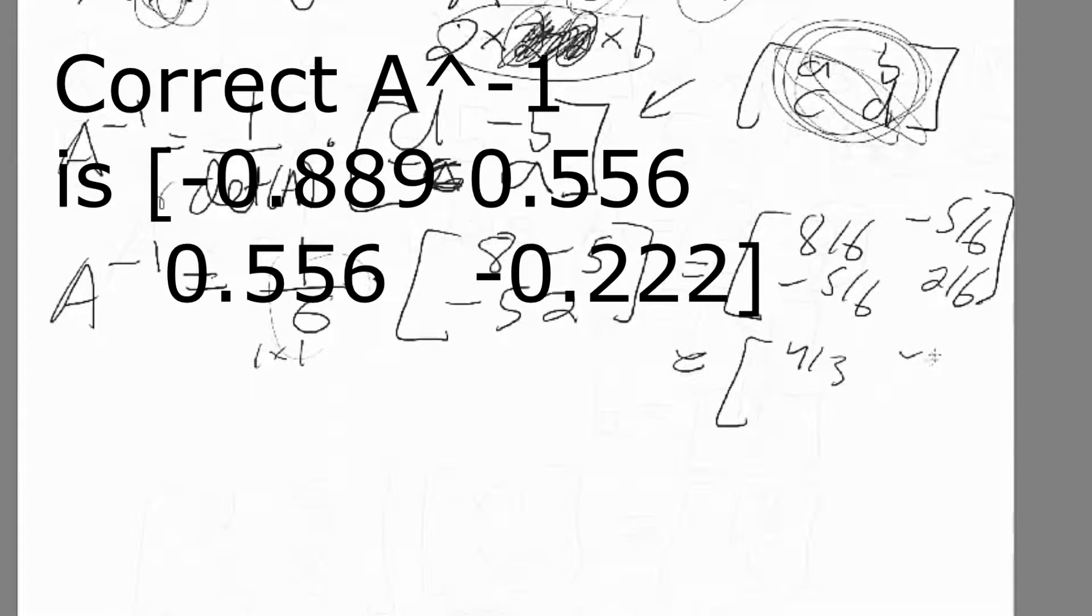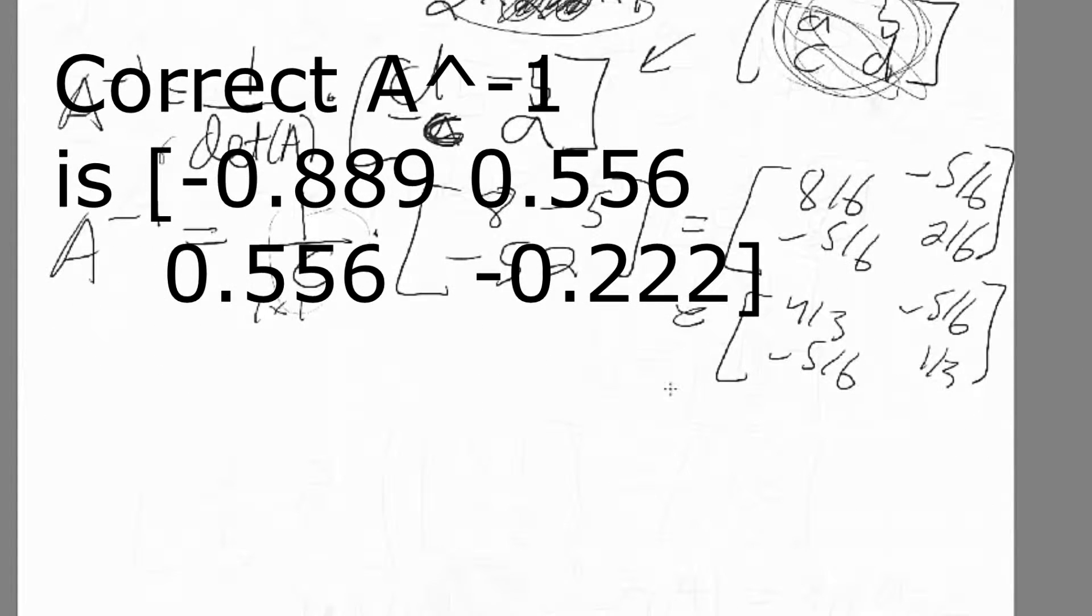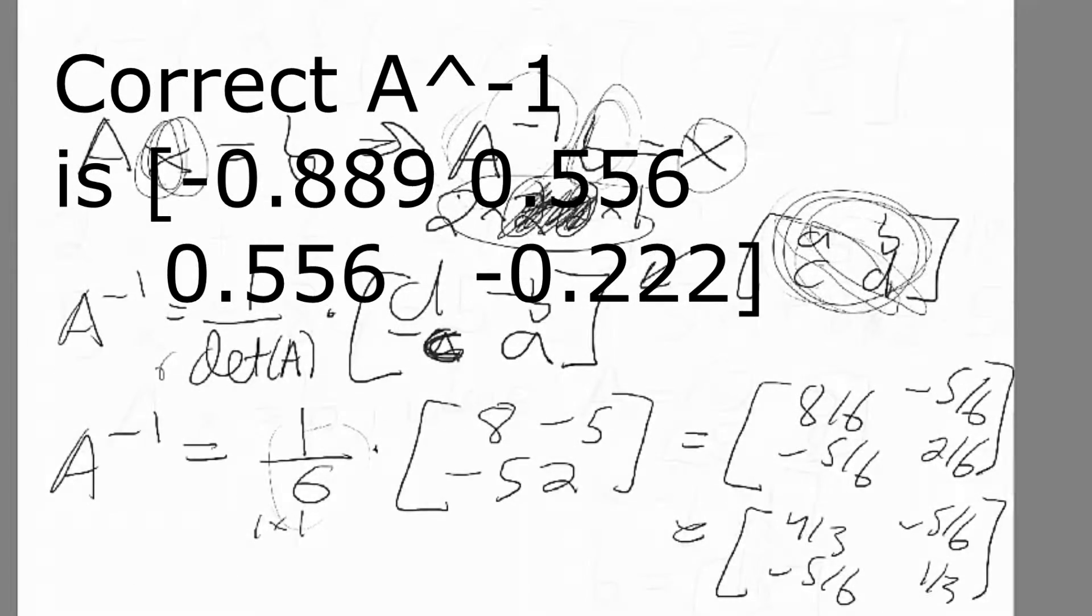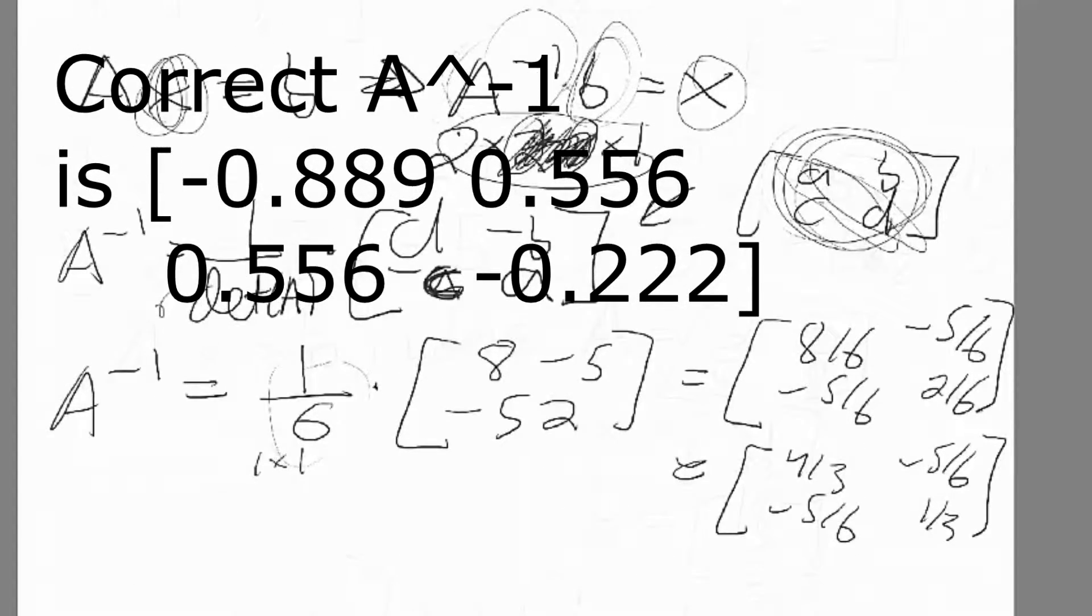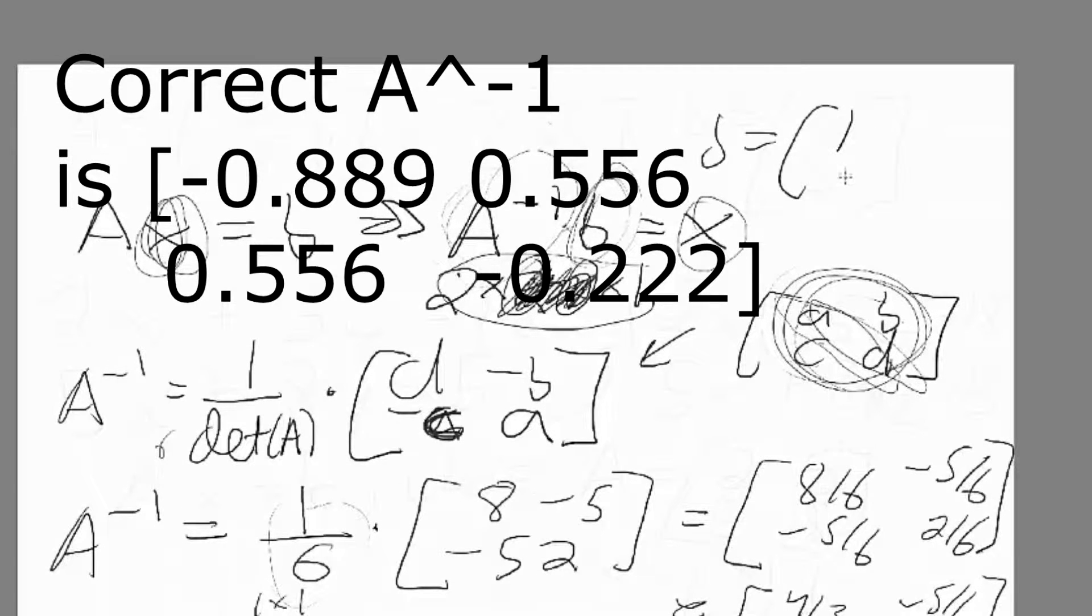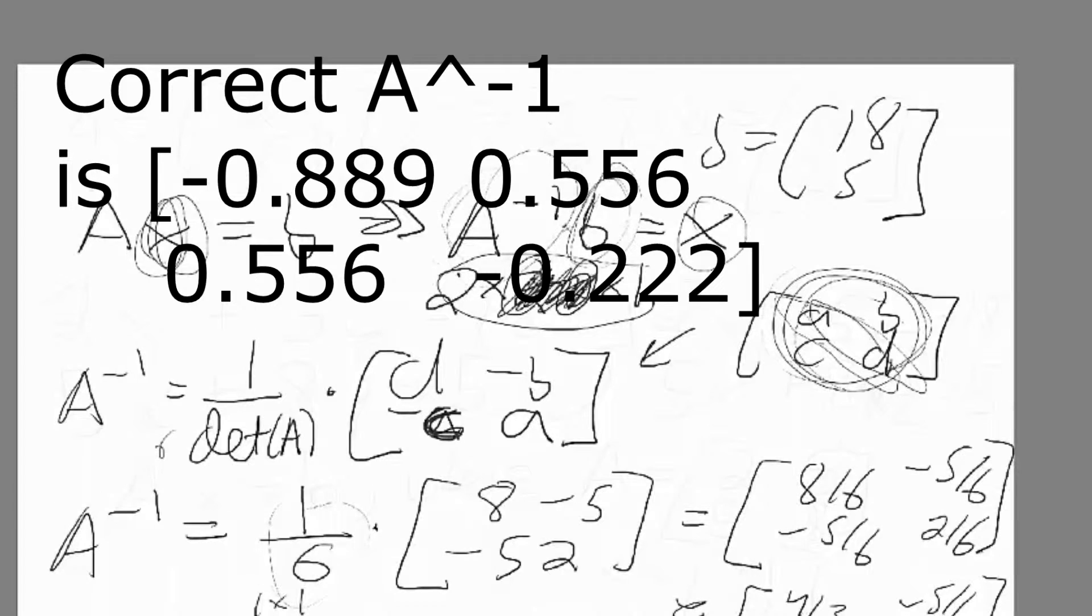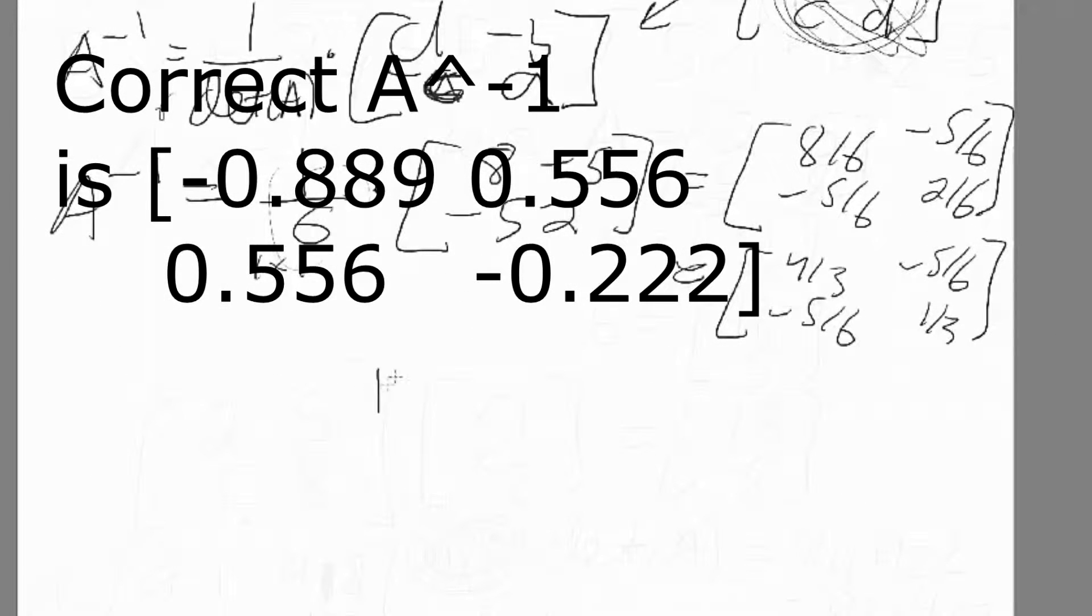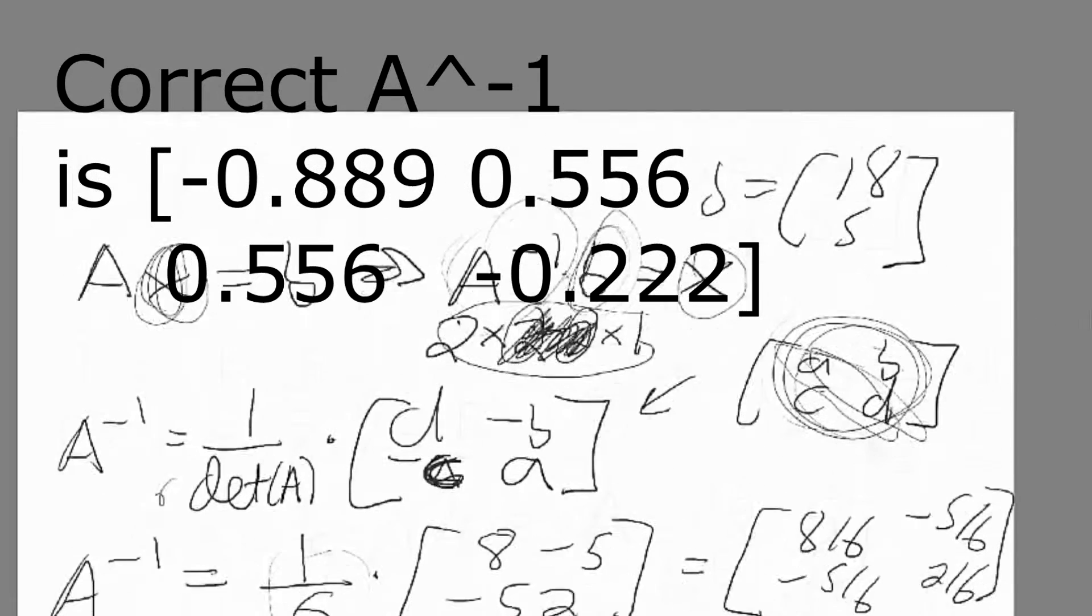Four over three, five over six, negative five over six, and one over three. As we said earlier, we need to find x, so we have to multiply by matrix B. B was 18 and 5.